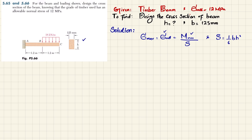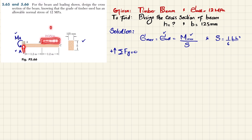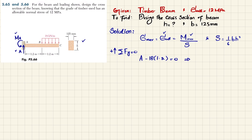Removing support A reveals a reaction force A and an external reaction moment M_A. Using the equilibrium condition — sum of all forces in the y-direction equals zero, with upward forces positive — we have A minus 18 × 1.2 = 0, giving A = 21.6 kilonewtons.